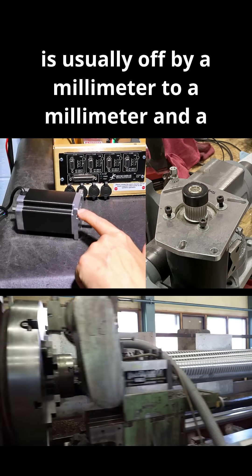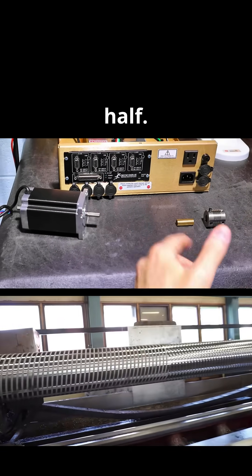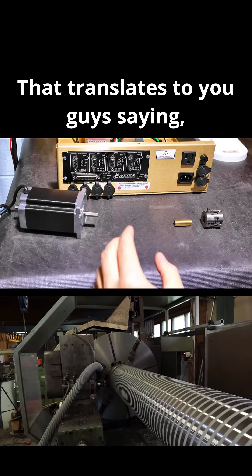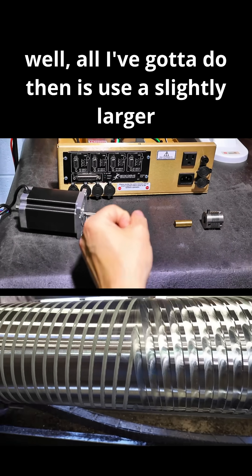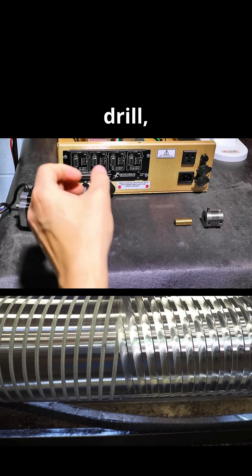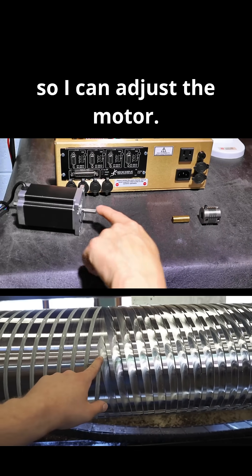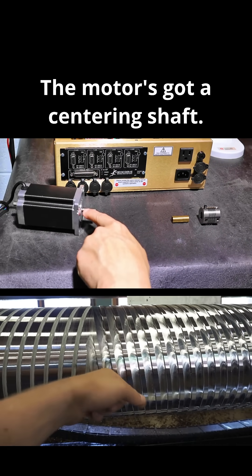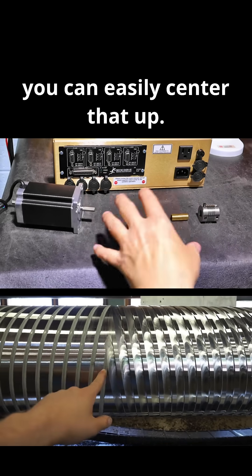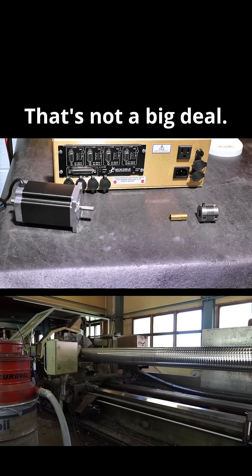is usually off by a millimeter to a millimeter and a half. Now what does that translate to? That translates to you guys saying, well all I've got to do then is use a slightly larger drill, bore out that hole, give myself a little place so I can adjust the motor. The motor's got a centering shaft. So once the shaft engages with the transmission, you can easily center that up. That's not a big deal.